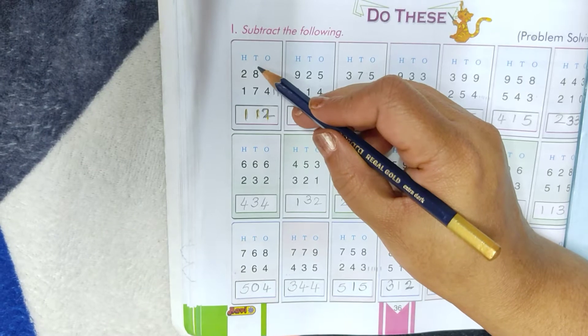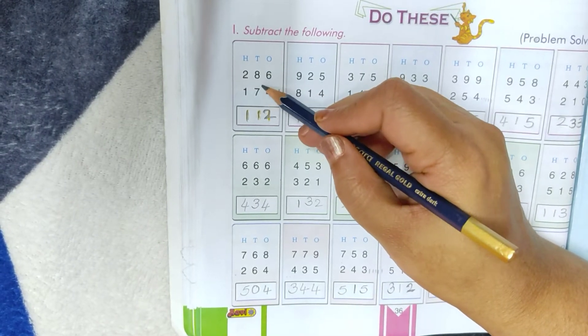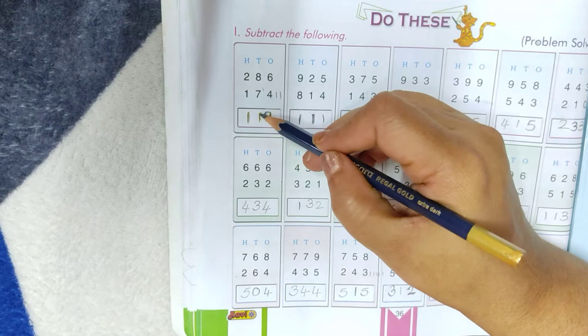Subtract the numbers which are in 10's place. After 7, 8, 1. Write 1 here.